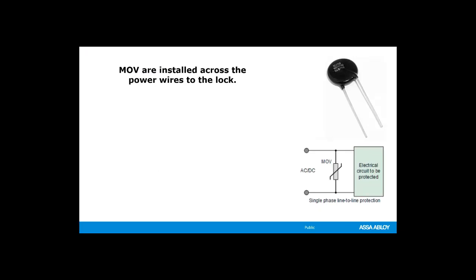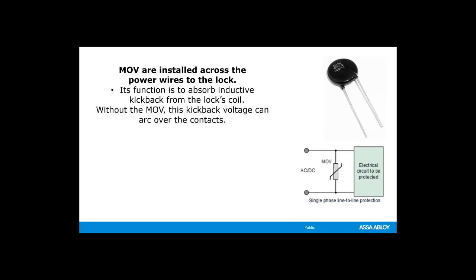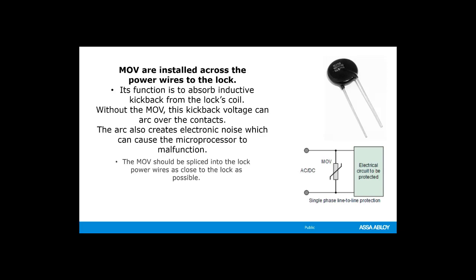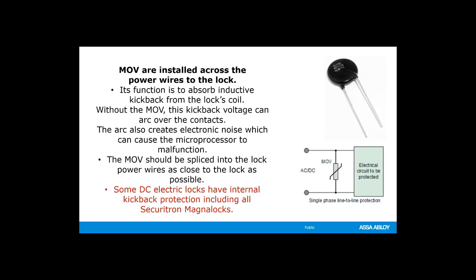MOVs are installed across the power lines of the lock. The MOV functions to absorb the induction kickback by the lock's coil. Without an MOV, the kickback voltage can arc across the contacts. The arc can also cause electronic noise and can cause the microprocessor to malfunction. The MOV should always be spliced into the lock's power as close to the lock as possible. Some DC electronic locks have internal kickback protection. All Securitron maglocks have the MOV automatically built in, so you never have to worry about it with Securitron maglocks.